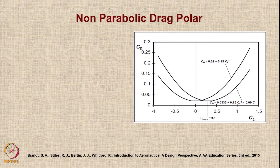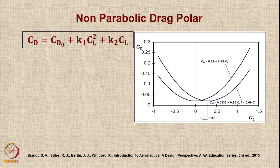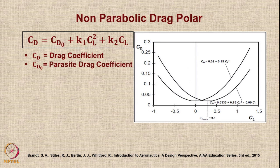Many aircraft have a non-parabolic drag polar. The CD for such aircraft can be expressed as CD0 plus K1·CL² plus K2·CL. There may be higher order terms but those are normally neglected. This becomes non-parabolic because of the linear term K2·CL. Here CD is the drag coefficient, CD0 is the parasite drag coefficient, CL is the lift coefficient, and K1 is a coefficient obtained from the aspect ratio AR and the Oswald efficiency factor E0.